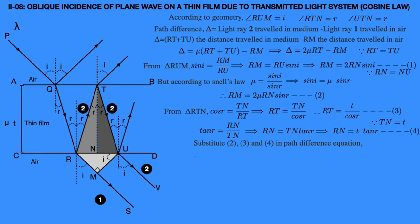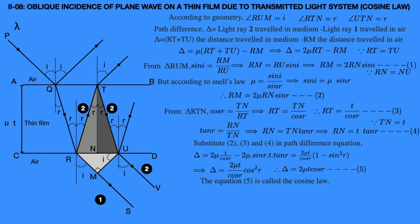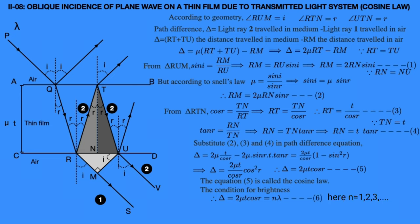Substituting, delta equals 2μ·(T / cos r) minus 2μ·sin r·T·tan r, which equals 2μT / cos r times (1 minus sin²r). Simplifying: delta equals 2μT / cos r times cos²r. The cos r cancels, giving the path difference delta equals 2μT·cos r. This is equation 5, known as the cosine law, applicable to the transmitted light system. The condition for brightness of rays 1 and 2 is delta equals 2μT·cos r equals n·lambda, where n equals 1, 2, 3, and so on — equation 6.